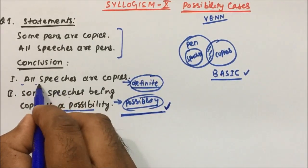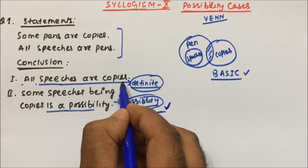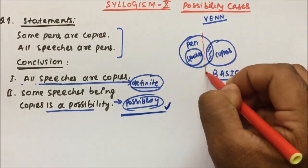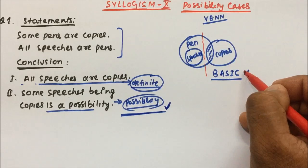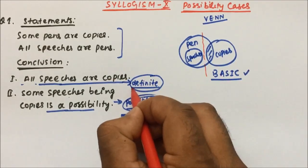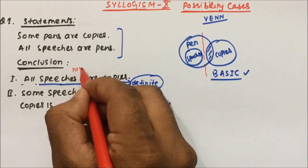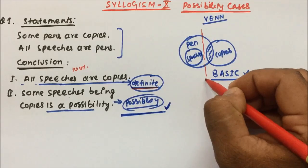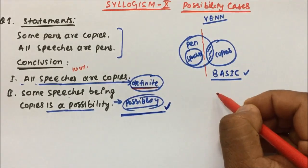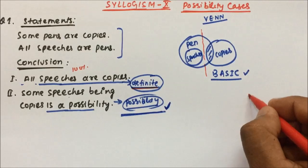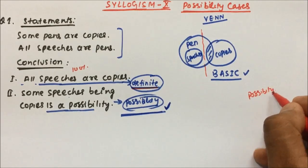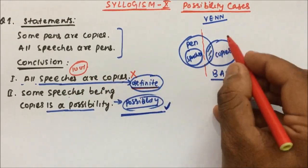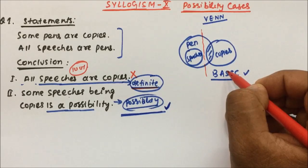Let's take the first conclusion: 'all speeches are copies.' When you see the basic diagram, there is no relation between speeches and copies. So no need to draw the possible diagram, because they are asking definitely — 100% all speeches are copies. There is no such relation in the basic diagram, and the possible diagram only tells you possibility, not definite 100% results. So this conclusion will become false.